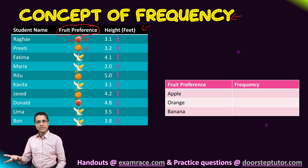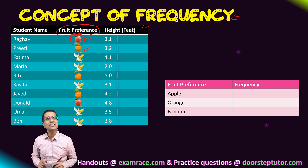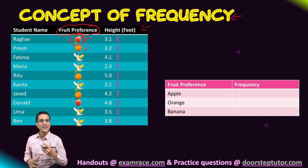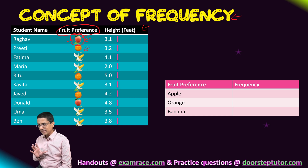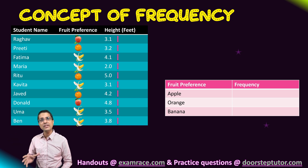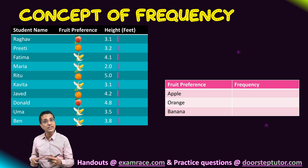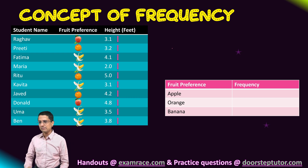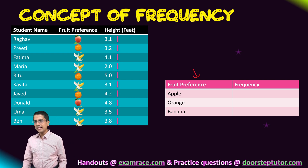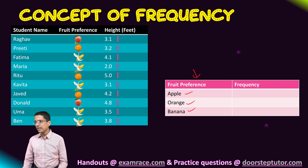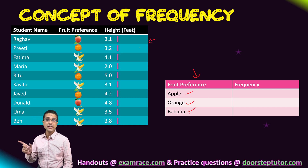We could simply count the values in the table, but that wouldn't be a systematic or mathematical method. So we will count the fruit preference data using a systematic method. The first step is to devise another table, in which we write each of the categories. We will count how many times each category — apple, orange, and banana — occurs in our student table.